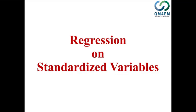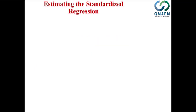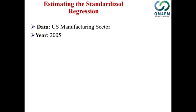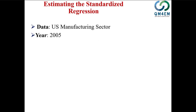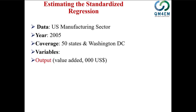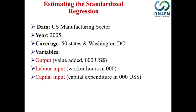The data I'm going to use is USA manufacturing sector data covering the year 2005 for 50 states and Washington DC, so 51 observations. The variables include output measured in thousands of US dollars, labor input measured in thousands of labor hours or worker hours, and capital input measured as capital expenditure in thousands of US dollars.